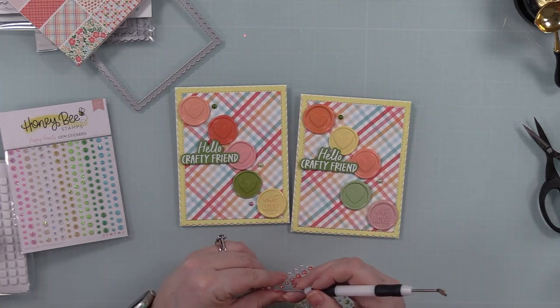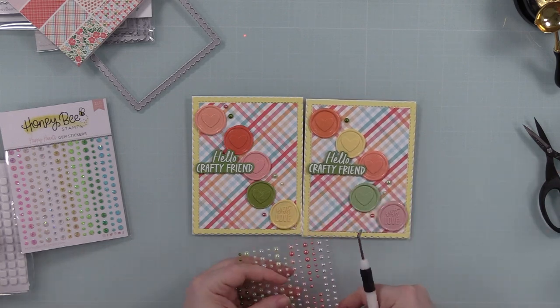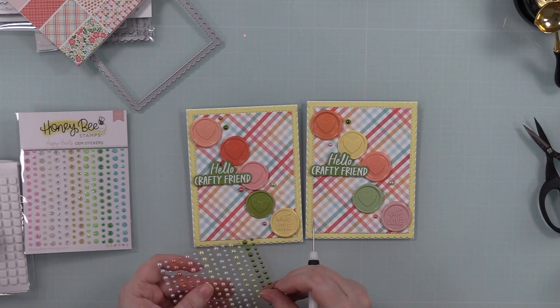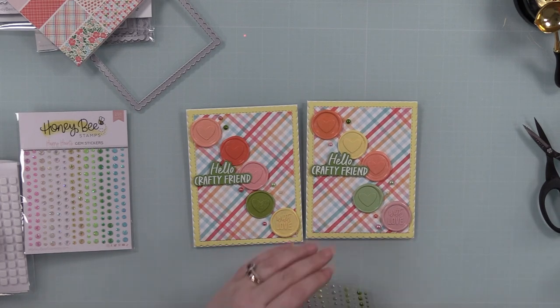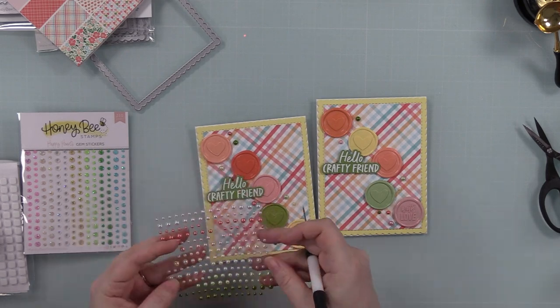And also because yes, I hoard them. These are all self-adhesive so you can just peel them off, stick them into place. So I just kind of sprinkled them around all these little wax seals, just kind of looking like a little fun cluster.